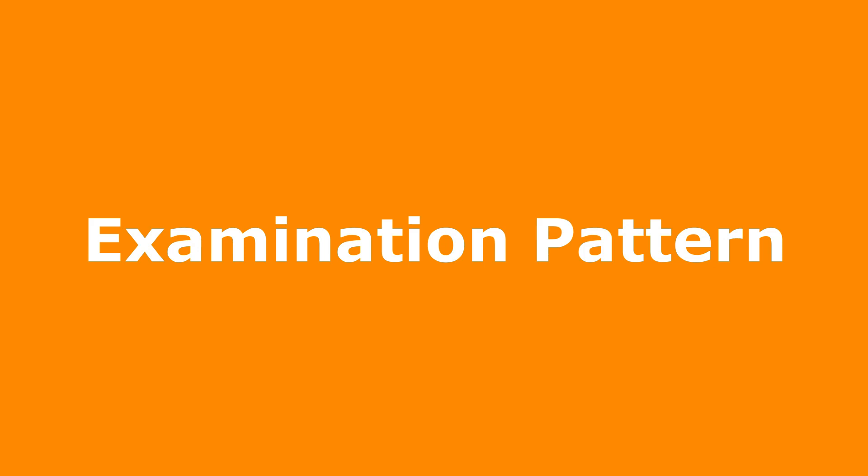Now let's talk about the examination pattern. WBJEE is in offline mode, and it consists of OMR-based papers divided into two papers. Paper 1 is 2 hours, which covers Mathematics. Paper 2 is 2 hours, which covers Physics and Chemistry. If you give both Paper 1 and Paper 2, then you are eligible for engineering, pharmacy, technology, and architecture courses.